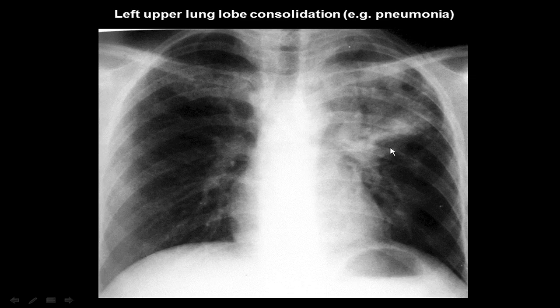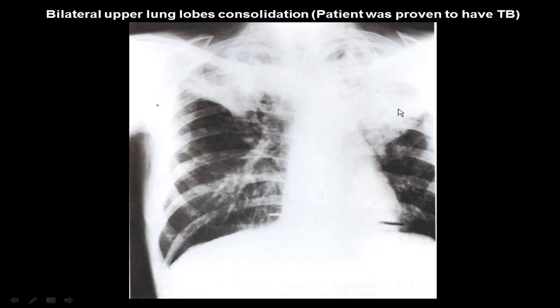Bilateral upper lobe consolidation. The plain X-ray — this is a posterior-anterior view plain chest X-ray. This is the normal density of both lungs, showing here white density of both upper lobes in this patient.